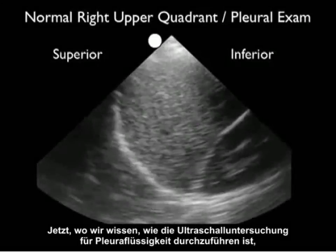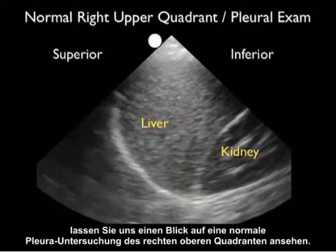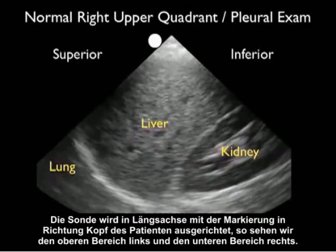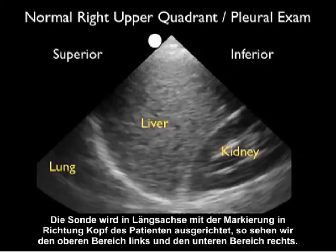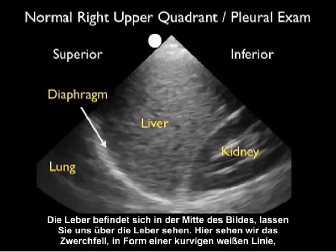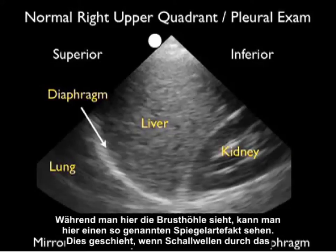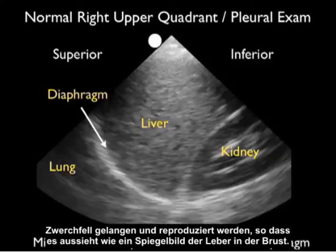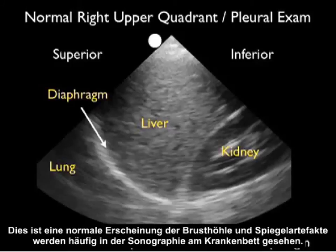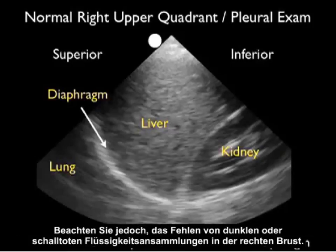Now let's take a look at a normal right upper quadrant pleural examination. The probe is configured in a long axis orientation with the marker towards the patient's head, so we see superior to the left, inferior to the right. The liver is in the middle of the image. Above the liver we see the diaphragm — that curving white line moving up and down as the patient breathes. Superior to the diaphragm is the thoracic cavity. What we see there is called mirror artifact, which occurs as sound waves pass through the diaphragm and reproduce what looks like a mirror image of the liver within the chest. This is a normal appearance, and mirror artifact is commonly seen on bedside sonography. Notice the absence of any dark or anechoic fluid collection within the right chest.